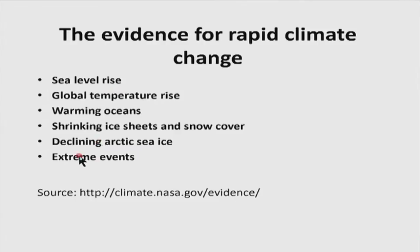Do we think climate change is happening? Of course, many scientists believe so. If you start searching about any kind of disasters happening, you will find several occurring. For example, extreme weather events are now happening more commonly than they were 50 or 100 years ago. We have evidence showing that sea level has risen, global temperature has risen in the last 100 years, the oceans are warming, ice sheets and snow covers are shrinking, and there is a decline in the Arctic sea ice level. These are a few evidences that tell us climate change is happening.